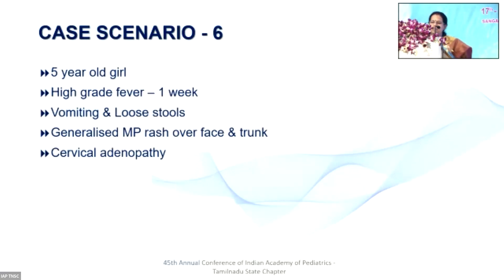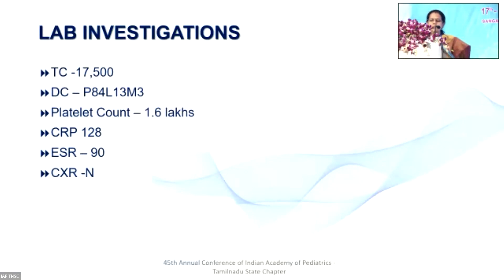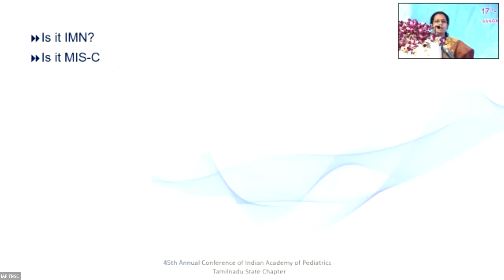Moving on to the next case: a five-year-old girl with high-grade fever of one week, vomiting, loose stools, generalized maculopapular rash over the face and trunk, and cervical adenopathy. Most of us would diagnose viral illness. Total count is 17,500 poly predominant, platelet count is 1.6 lakhs, CRP is 128, ESR is 90, chest X-ray is normal. This is a little confusing — if viral, we normally expect lymphocytosis and eosinophilia, but here there is lymphopenia and no eosinophilia, and CRP and ESR are very high.